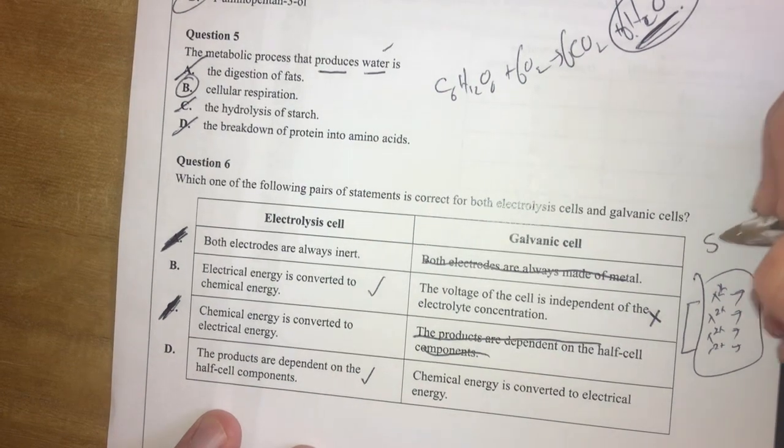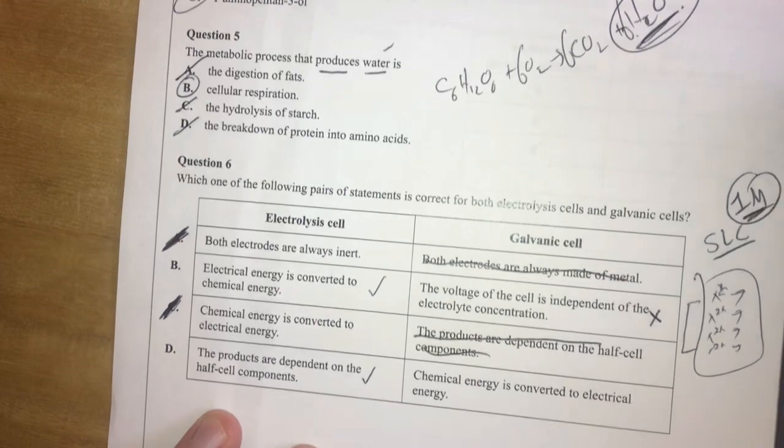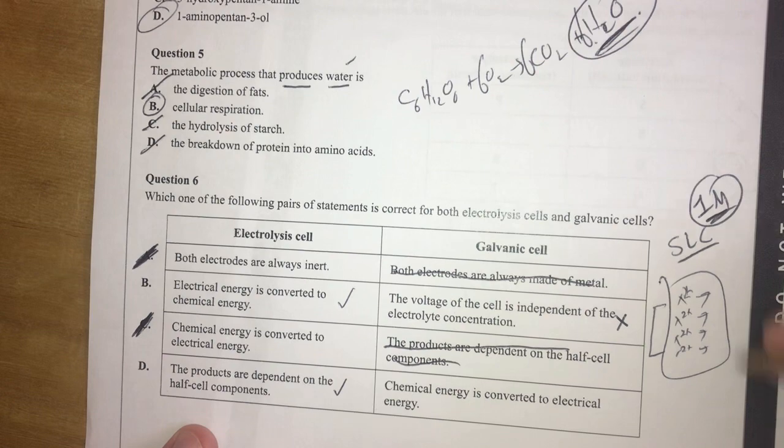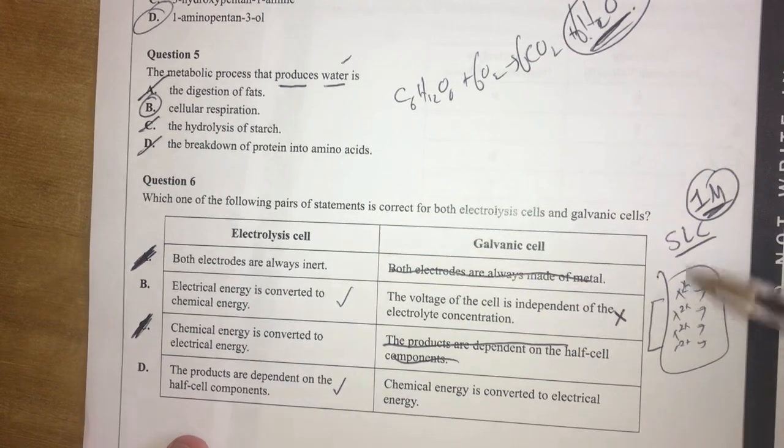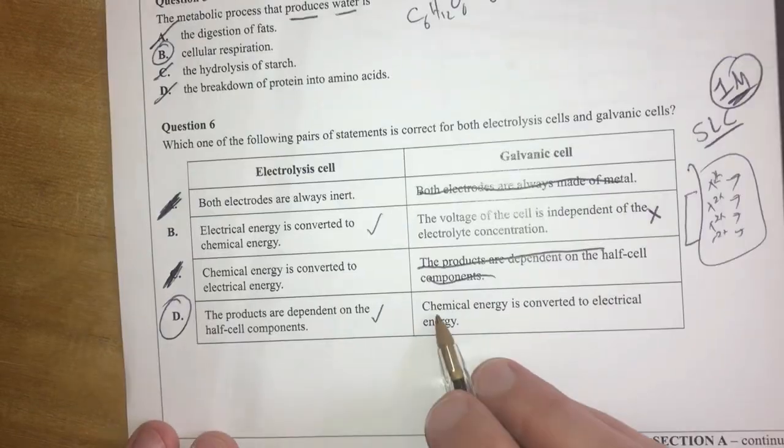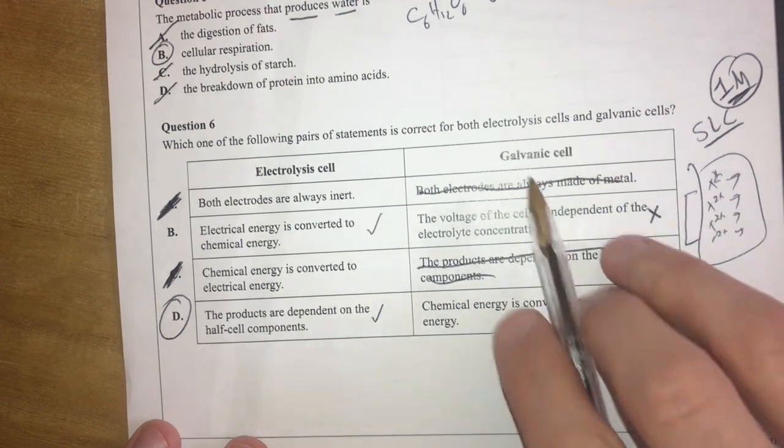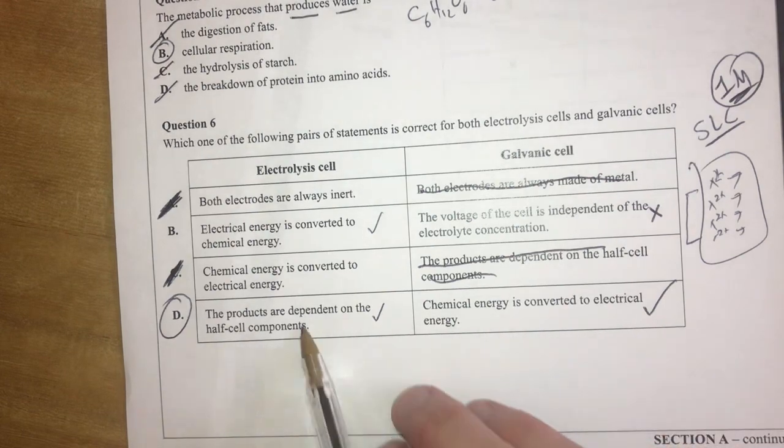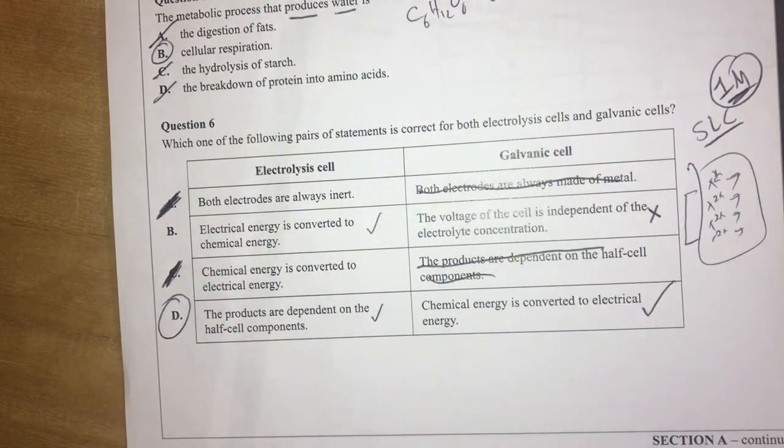And this is based around standard laboratory conditions, which includes one molar concentrations. So if you deviate from standard laboratory conditions, these guys are going to move around. So therefore, you are going to produce different voltages for different concentrations. So the answer must be D. But let's have a look. Chemical energy is converted into electrical energy. And that is definitely true because it's a galvanic cell. So galvanic cells are like batteries. So therefore, this is both true for electrolysis, for this one, and galvanic cells for this one.